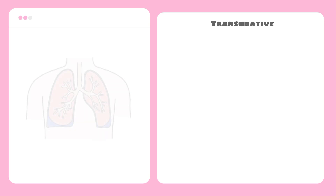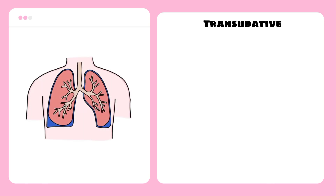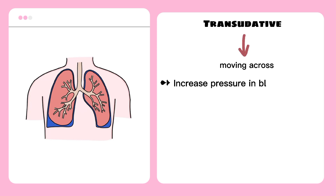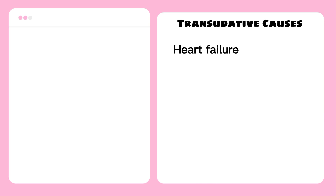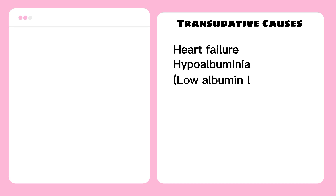For the second classification, we have transudative. When we say transudates, it means moving across. Transudative pleural effusion is caused by fluid leaking into the pleural space, from increased pressure in the blood vessels, with a low protein content that has diffused from the blood circulation causing fluid to leave the vascular system. For the causes of transudative, first we have heart failure, and hypoalbuminemia or low albumin level. Hypoalbuminemia can cause a decrease in oncotic pressure causing extravasation of fluid into the interstitial space. In conditions of severe hypoalbuminemia, fluid extravasation may cause occurrence of pleural effusion.